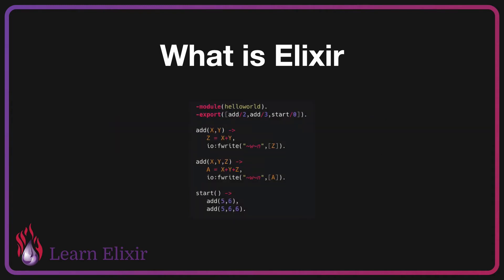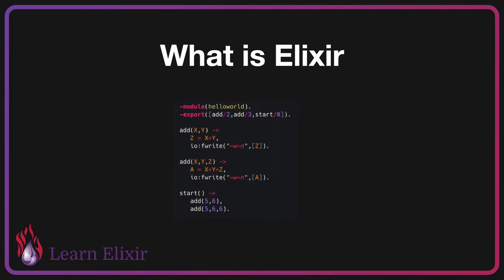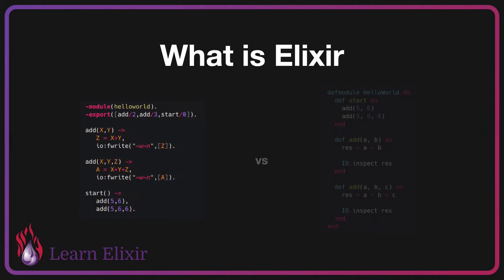The reason Elixir was created was actually because Erlang looks like this — and as you can see, this isn't necessarily the nicest code to be reading or writing. Instead, we have a new skin on it, which is Elixir, which makes the code look a bit more like this. Looking at this, most developers would probably find the Elixir version a bit easier to understand, even more so when you start getting more complex.